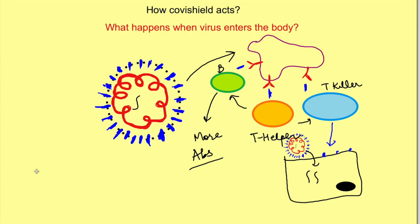So that's the mechanism of action of the vaccine Covishield. Hope you have understood the background immune mechanisms of our body which are activated due to the vaccine, and how it helps us to effectively attack the virus which may enter our body in the future. Thanks for watching the video. If you liked it, do press the like button, share the video with others, and don't forget to subscribe to the channel Physiology Open. Thank you.